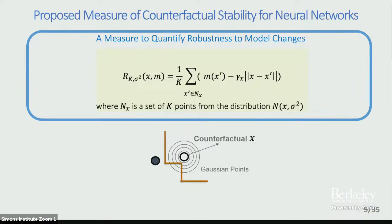These three properties lead us to propose a measure of counterfactual stability. For a counterfactual point, we generate a bunch of Gaussian points around it and compute the mean value. The measure combines high local mean and low local variability, where the variability is characterized using the Lipschitz constant of the model. Now we have a measure — how do we say whether this is a good measure or what kind of guarantees can we give for it?